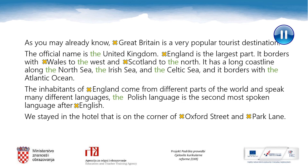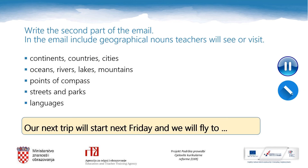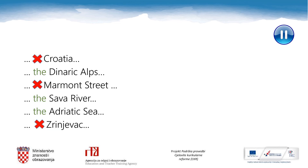Now for the second part of the email. Your task is to invent the second part of the email. Include geographical nouns that the teachers will see or visit. Start your email with the sentence: 'Our next trip will start next Friday, and we will fly to...' Remember the nouns and your sentences from the beginning of this lesson? You can do a self-check and correct the definite article in your sentences. Did you use 'the' in front of the Dinaric Alps, the Sava River and the Adriatic Sea? And no article in front of Croatia, Marvin Street and Zrinjevac?